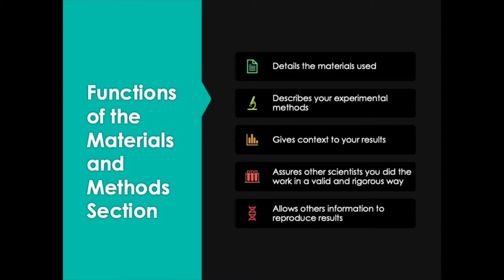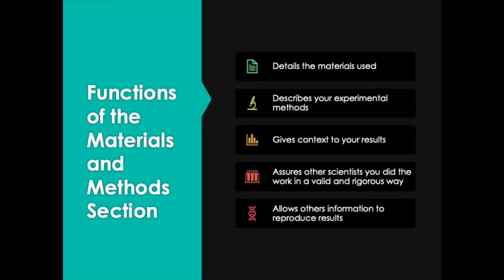You're also going to describe your experimental methods. We'll get into details later about how thoroughly you should describe these methods, but it's really important to do so in a way that's at least thorough enough that another scientist in your field could replicate the study — meaning they could take your materials, read your paper, do the same experiments, and come up with results that are very similar, if not the same. The Materials and Methods section also gives context to the results that come later, so when readers look at a figure, they can go back and find the appropriate paragraph and understand that figure better.